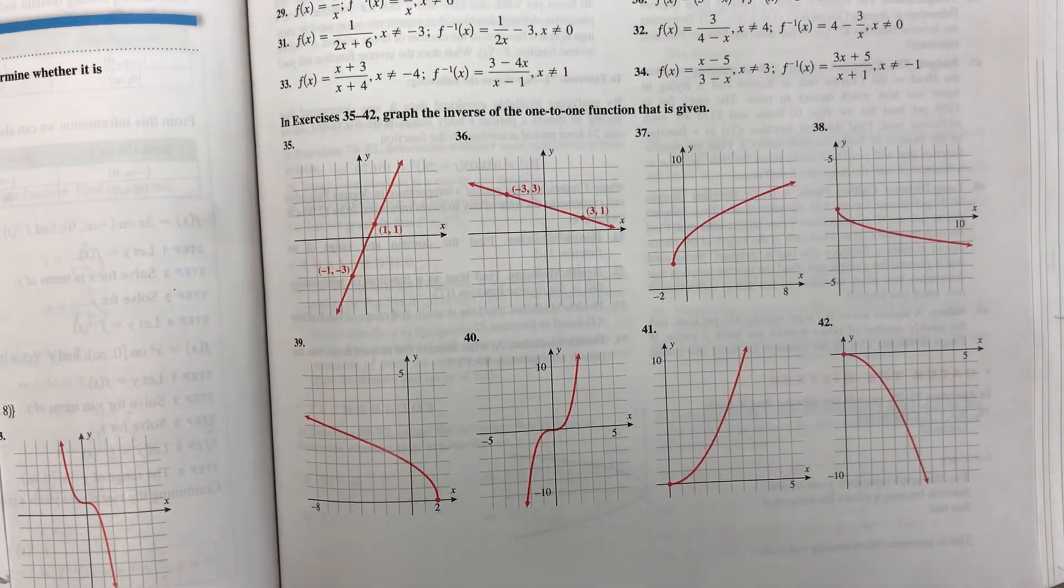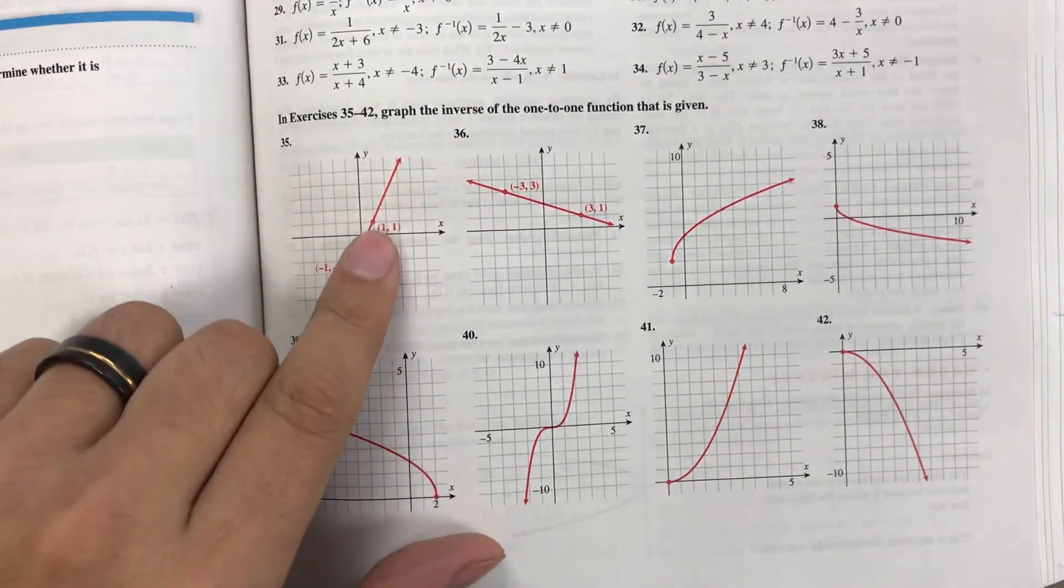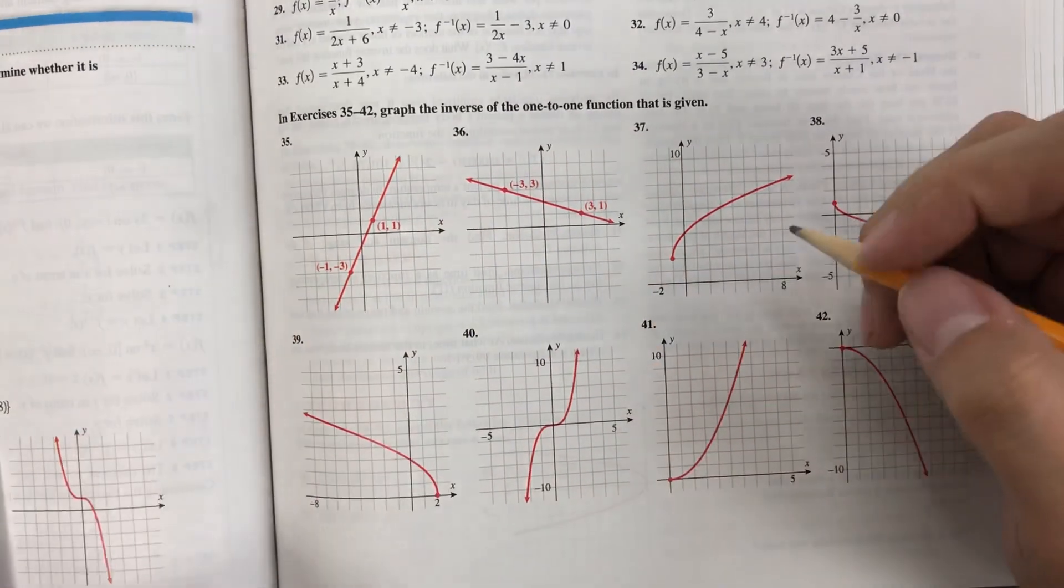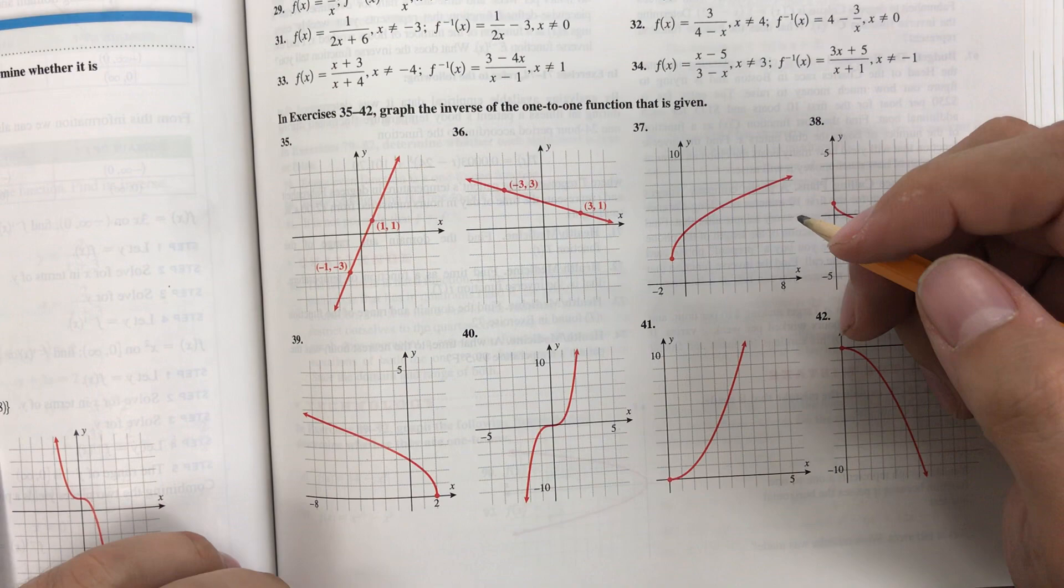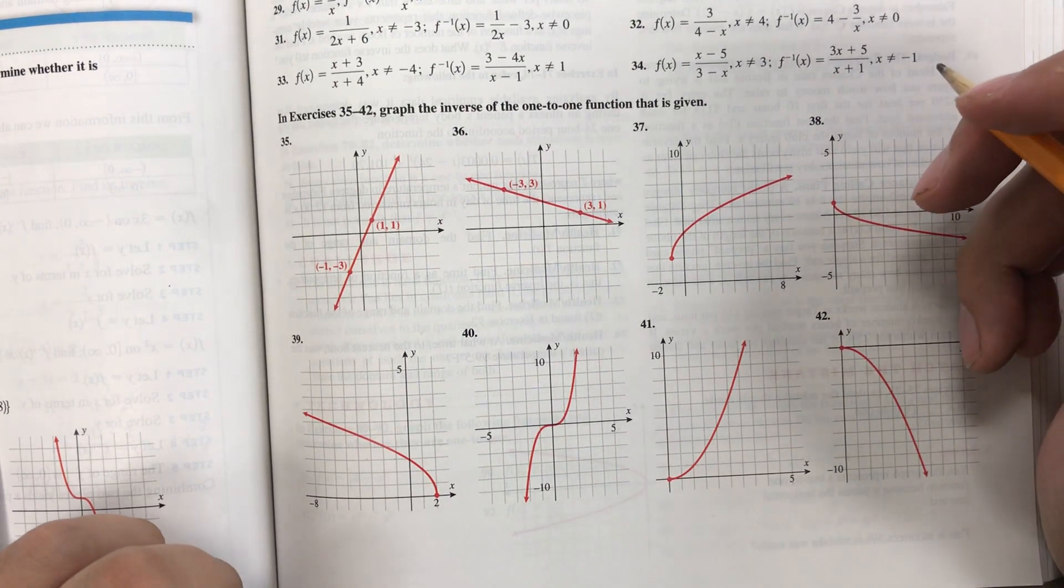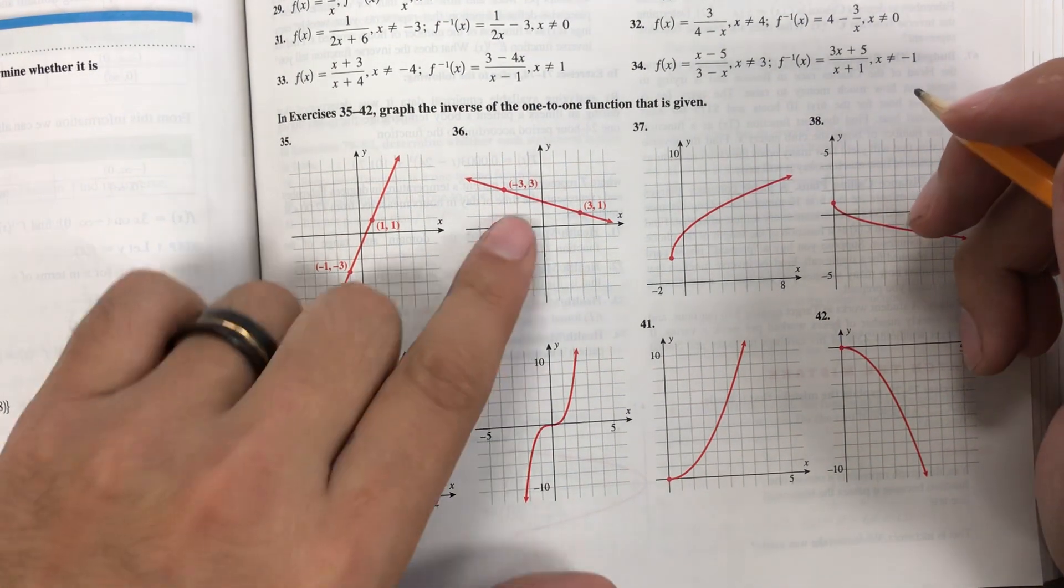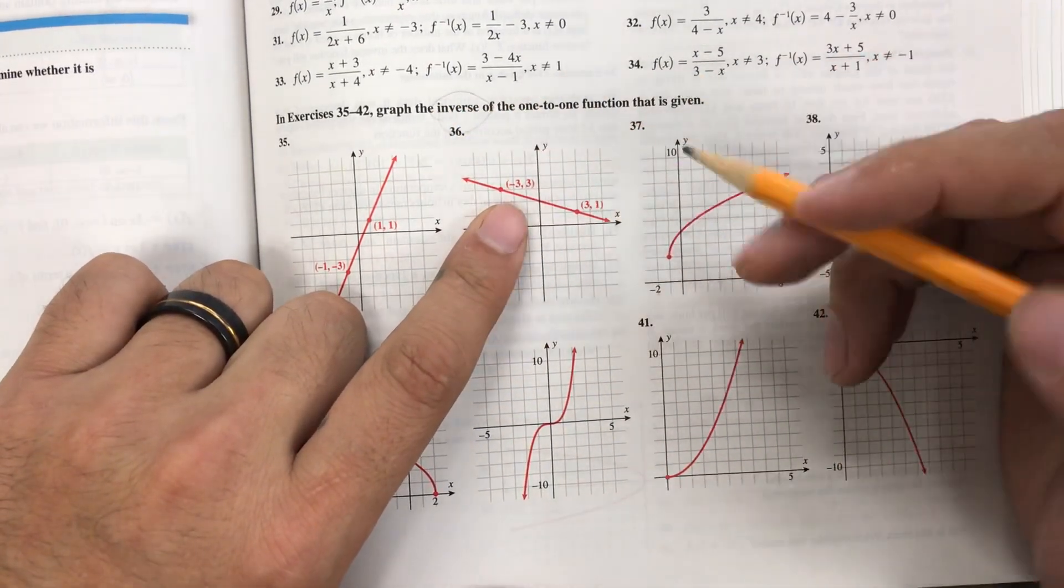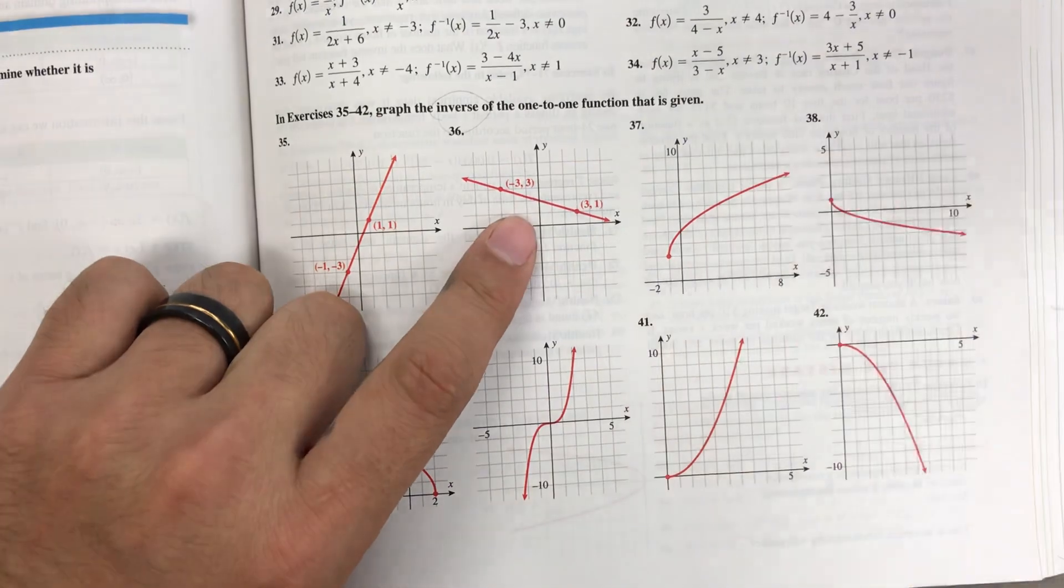Okay, now we're going to do some of these graphing functions. So we're going to graph the inverse function along with the one-to-one function. Let's see here. We're going to do number, I don't know, start with 36. Okay, so if you're supposed to graph the inverse function, one thing that you want to remember is the following.